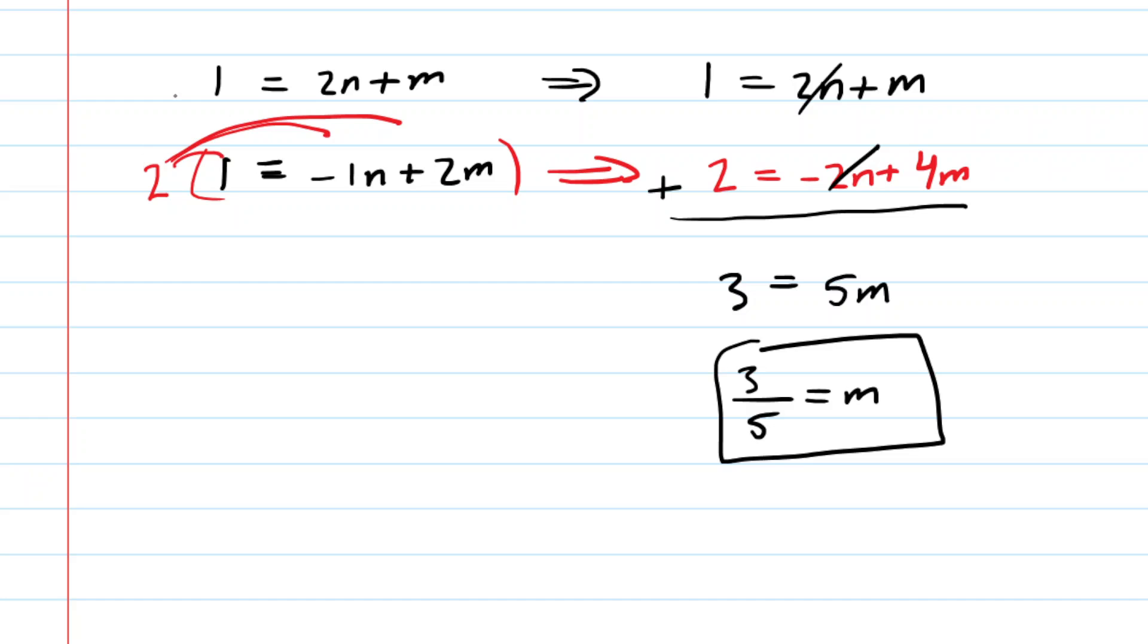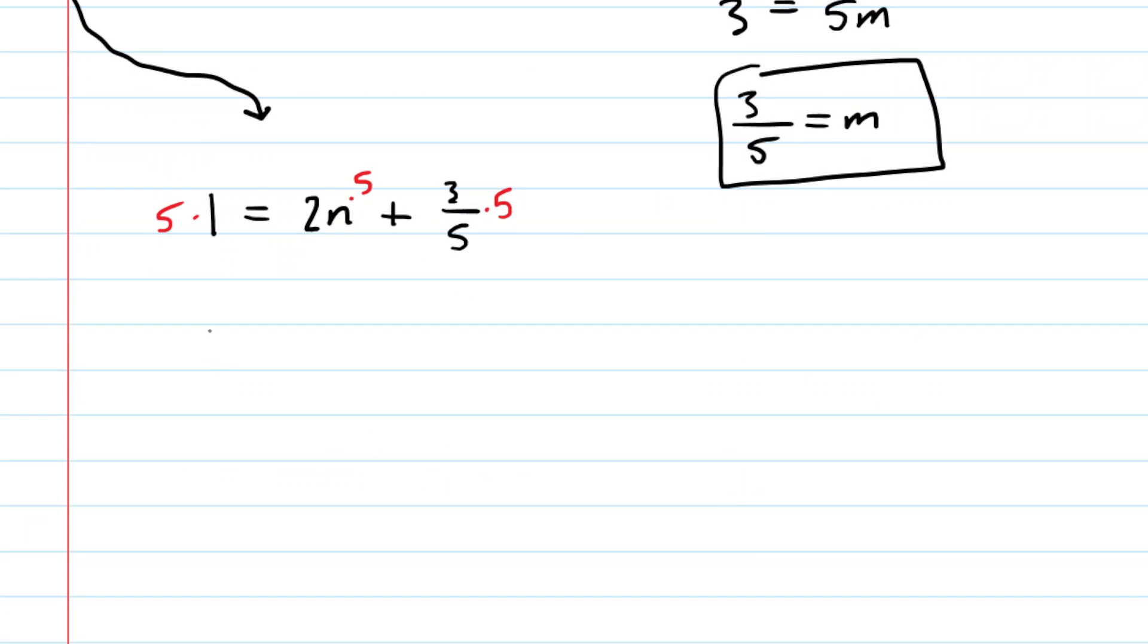To solve for n, we can pick either of the original equations. We'll take this one. And we will simply substitute the m that we just obtained. So that was 3 fifths. A couple of ways we could solve this. Perhaps the best way is to multiply every term here by 5. Because this generates an equation without any fractions. So now we have 5 is equal to 10n plus 3.